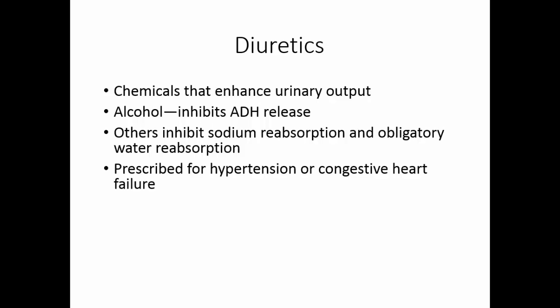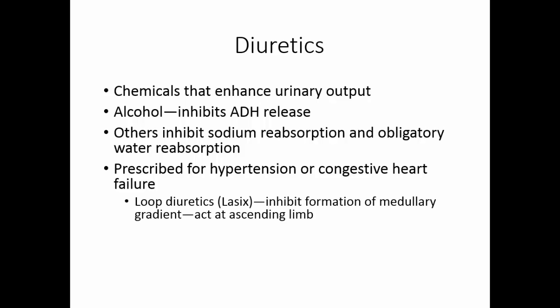Diuretics are typically prescribed for people with hypertension or congestive heart failure — they want to get as much fluid out of them as they can. Loop diuretics like Lasix inhibit the formation of a medullary gradient, so we don't have that increasing osmolality as we go down the loop of Henle. They tend to act at the ascending limb of the loop of Henle. Thiazides are a little less potent and act at the distal convoluted tubule.